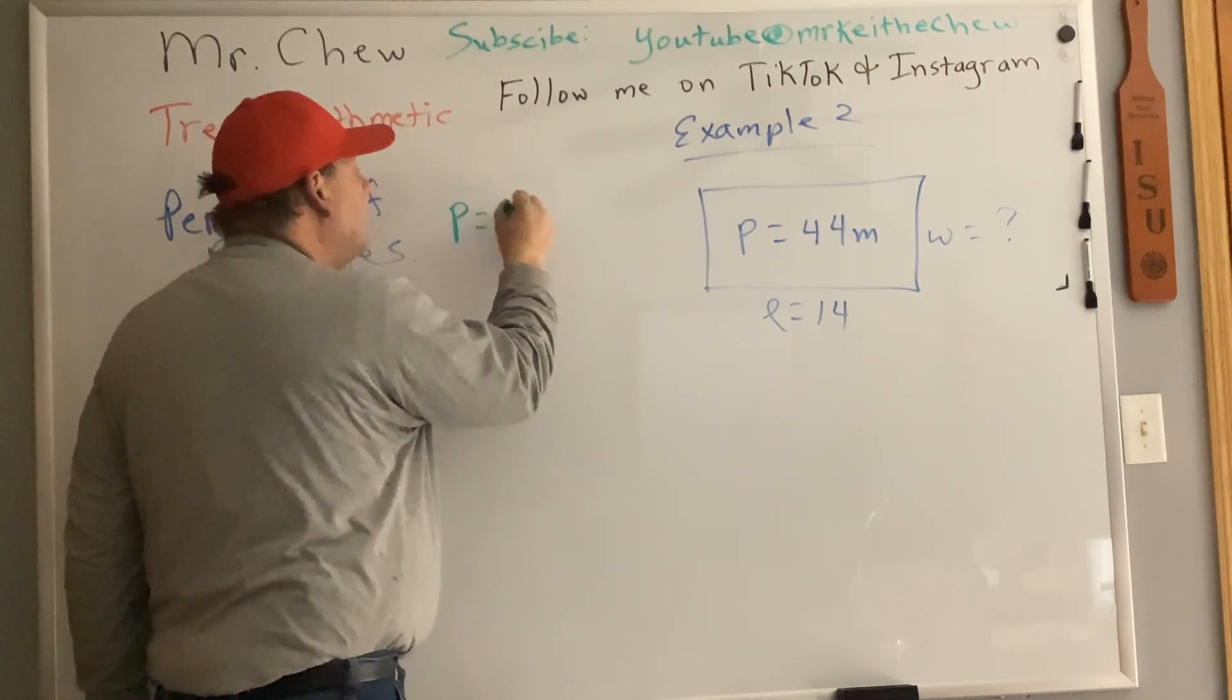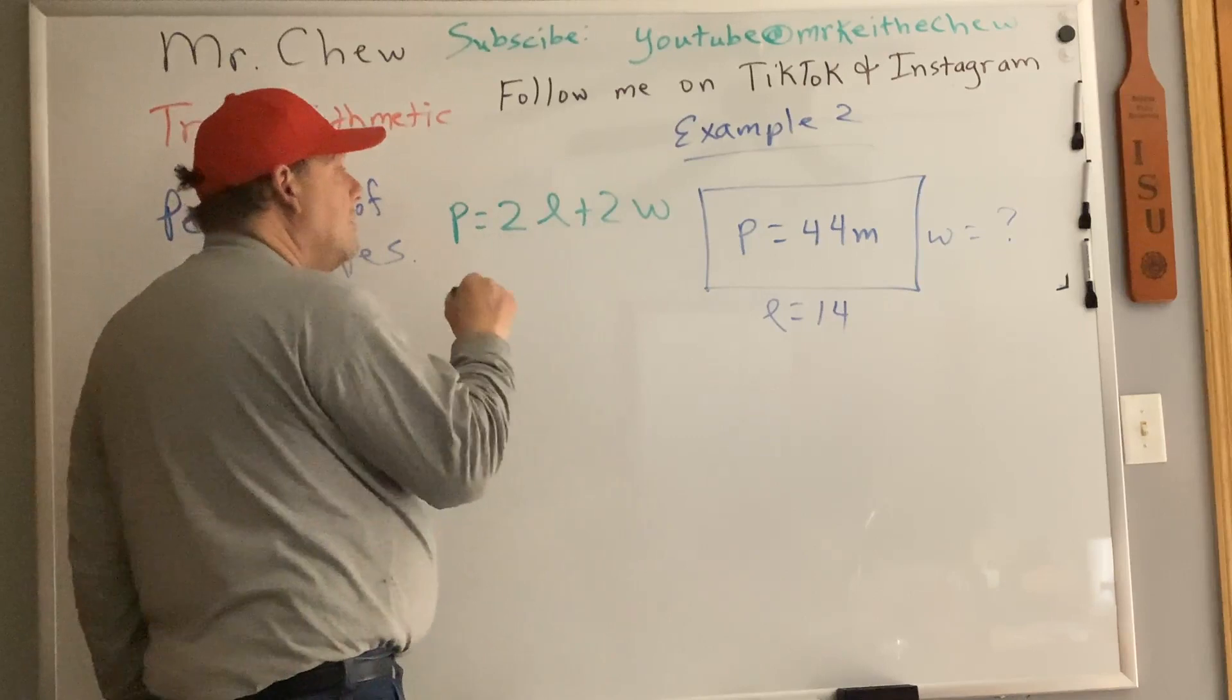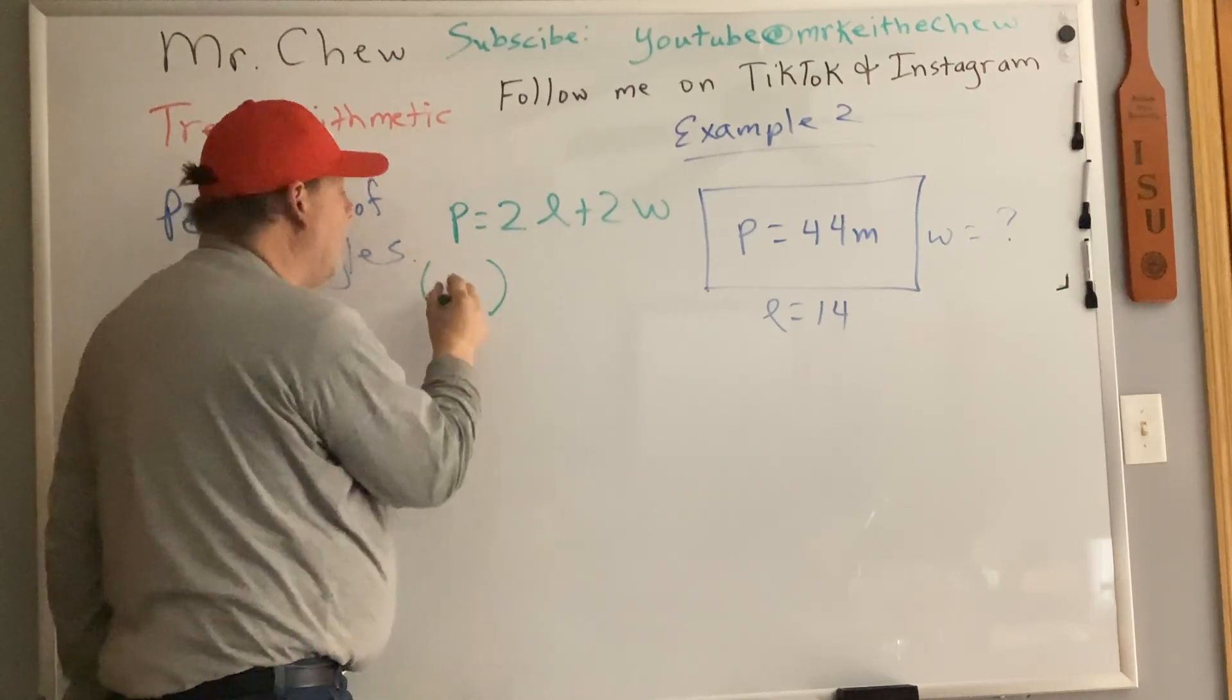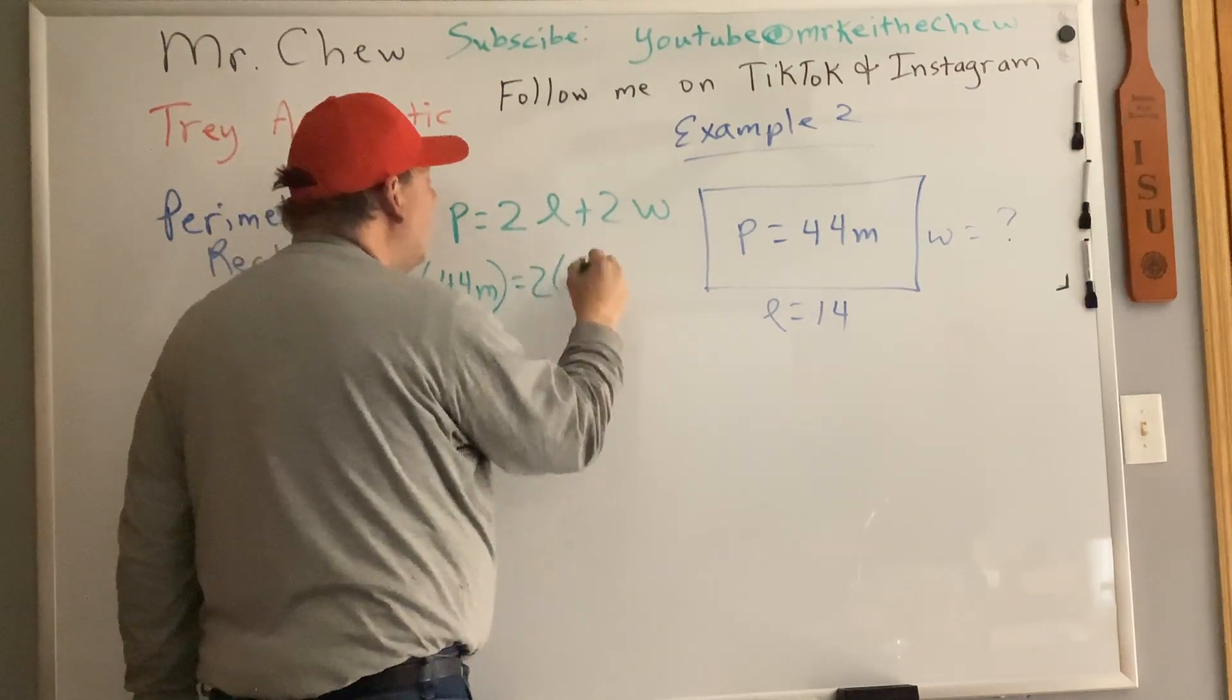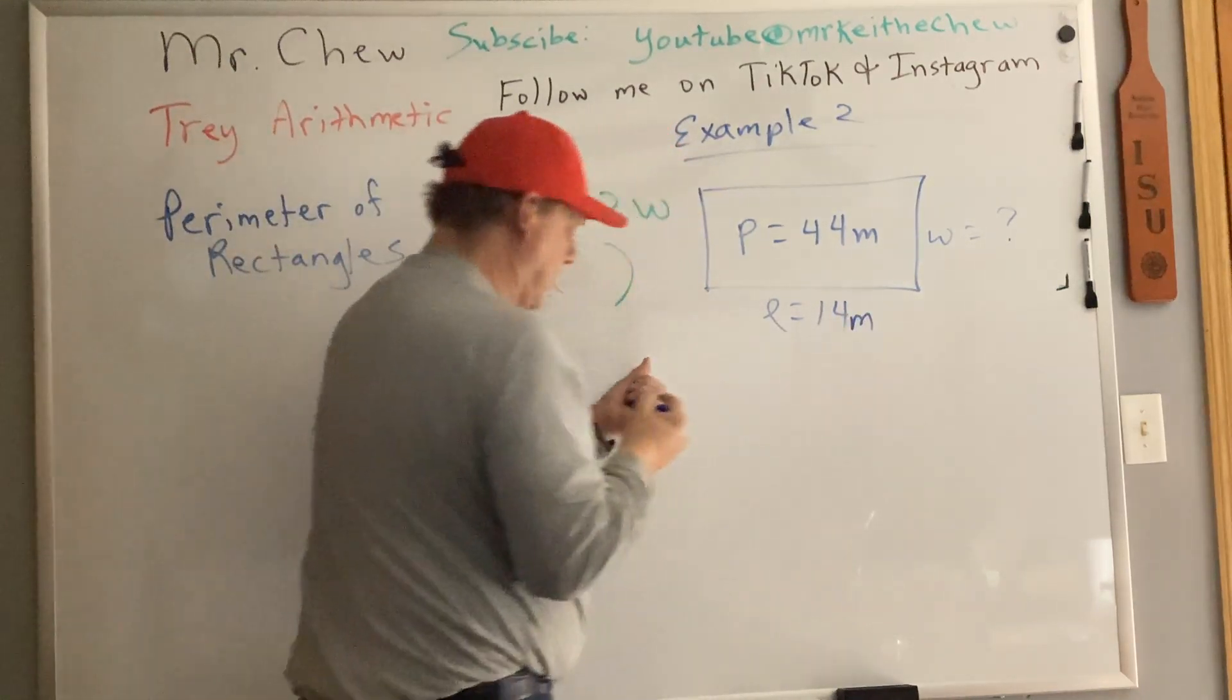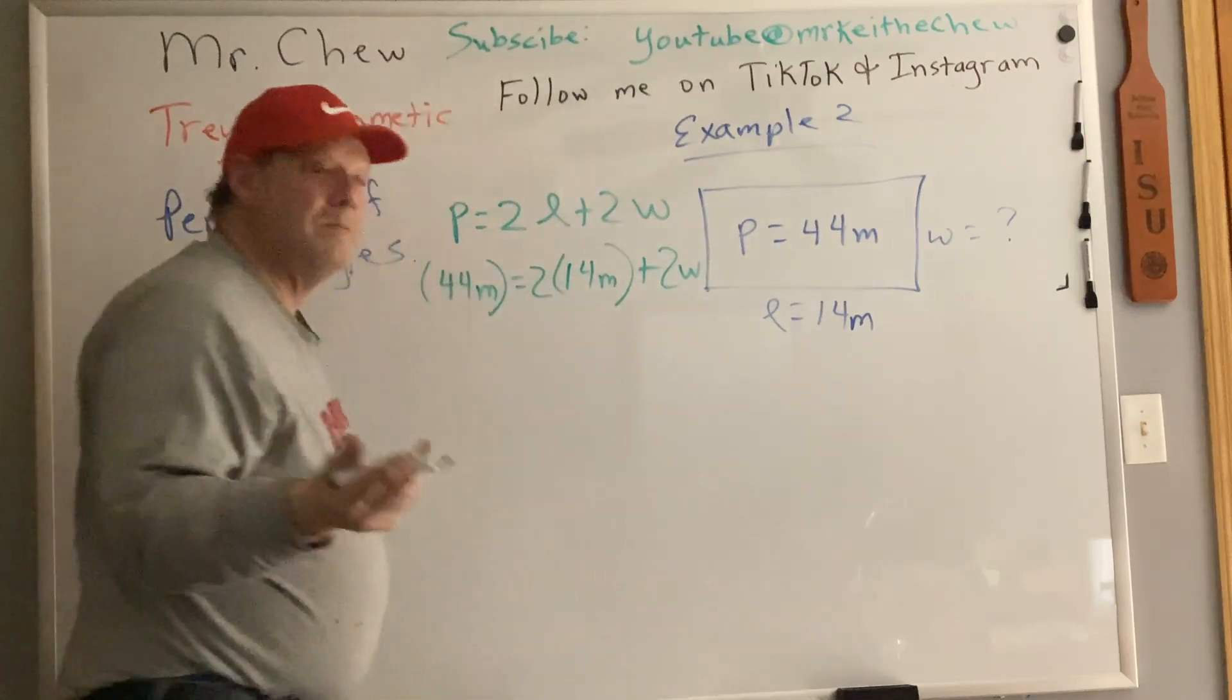So we use the same formula that we used a minute ago. Perimeter equals two times the length plus two times the width. And now this becomes what's called a literal equation when you get into algebra. So I substitute the 44 meters in for the p for the perimeter.